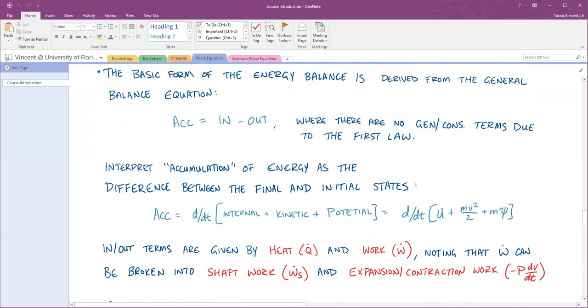I'm going to interpret accumulation of energy as the difference between the final and initial states. This is particularly useful in closed systems. I'll write the accumulation as the time derivative of the sum of the internal kinetic and potential energies. In Chapter 3 of Sandler, the internal energy is denoted by U. The kinetic energy is mv squared over 2. The potential energy is the mass times the potential energy function psi. Psi is a catch-all for all forms of potential energy. Oftentimes in thermodynamics, we end up getting rid of the kinetic and potential terms anyway.